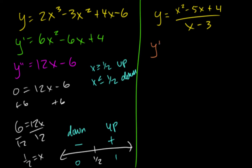This one, we need to use the quotient rule, which is going to be a mess. I'm going to call this U and this V. So U prime is going to be 2x minus 5. V prime is going to be 1.